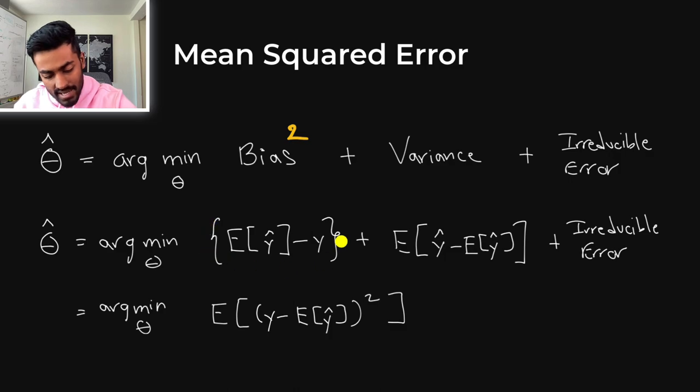And so the squared bias can be represented mathematically in this way, the same thing about variance, and then we have an irreducible error. And with some simplifications, you will actually see that this very formulation is going to lead to this mathematical form, which is exactly what is the mean squared error.